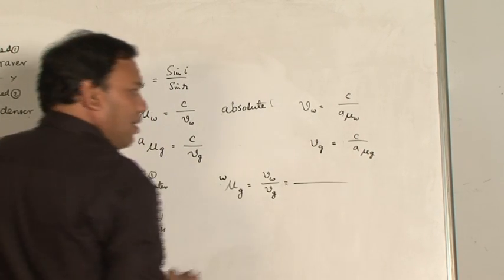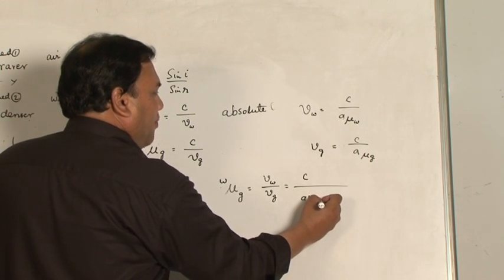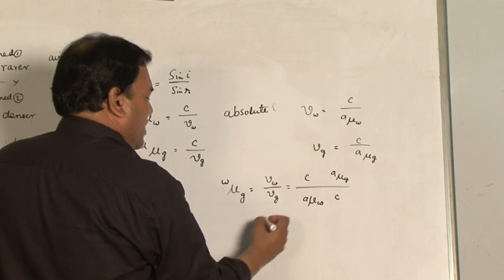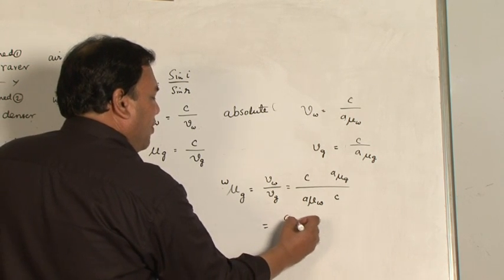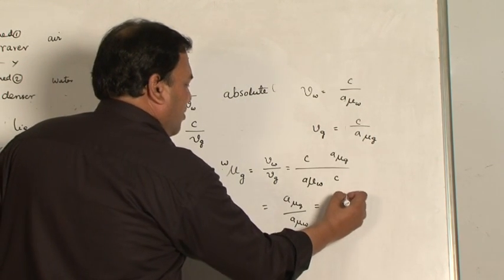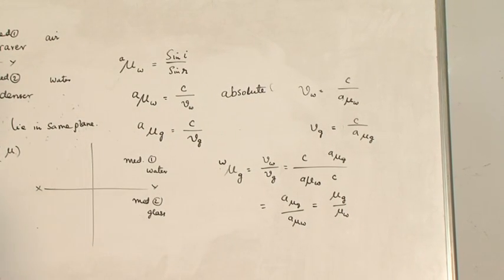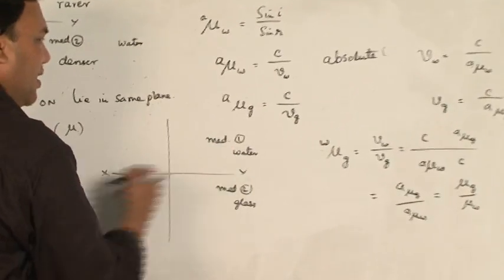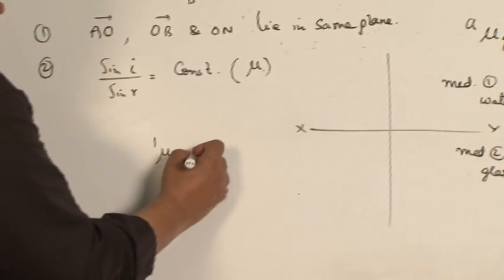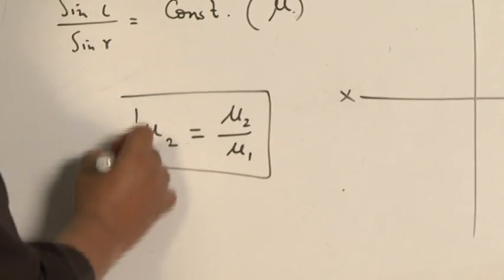Now let me substitute these values. If I substitute, I get C upon A mu_w divided by C upon A mu_g. C gets cancelled, and then I get A mu_g upon A mu_w — or, by dropping A, I can write mu_g upon mu_w. So this is the final equation. In other words, if this is the first medium and this is the second medium, then 1 mu 2 equals mu 2 upon mu 1.